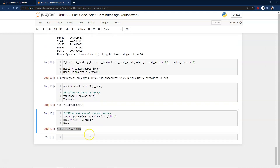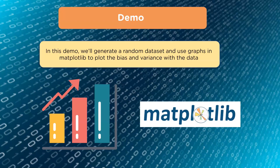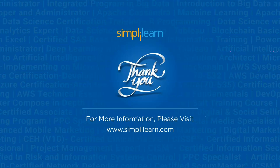If you want a copy of either demo — the first with the custom numpy array or the second with the weather CSV — send a note to Simply Learn and they'll forward it. We've now gone through two demos on bias and variance. In the first, we made up our own data; in the second, we used weather data through a linear regression model. Thank you for joining us today. Visit www.simplylearn.com — get certified, get ahead.